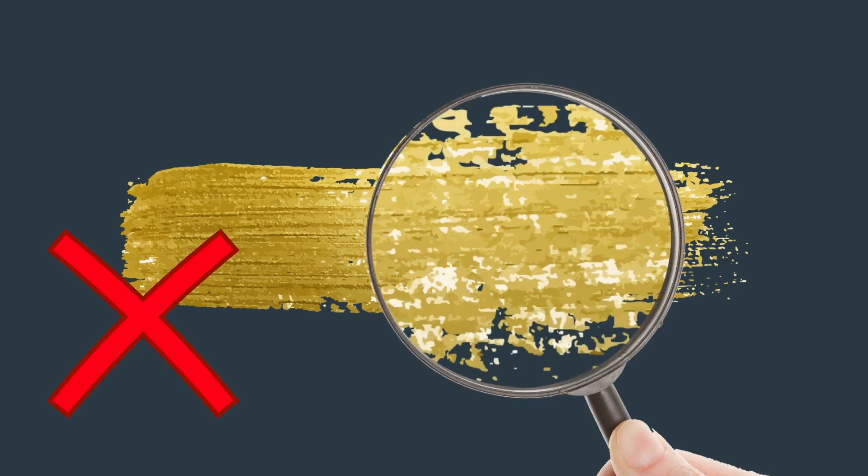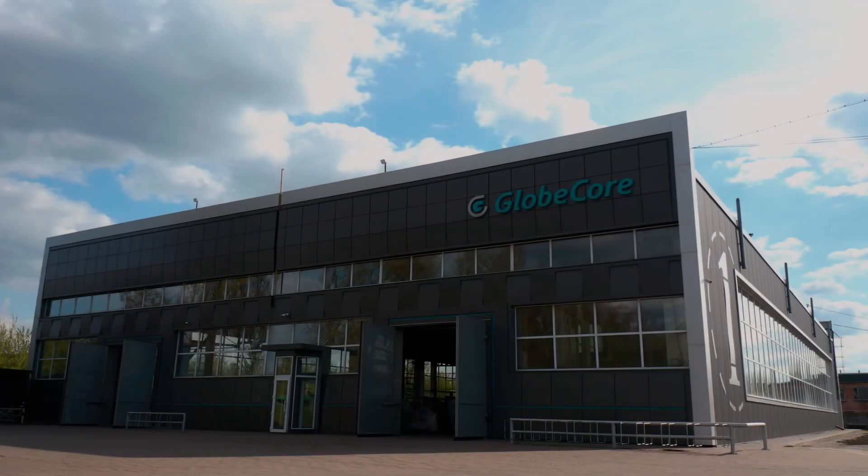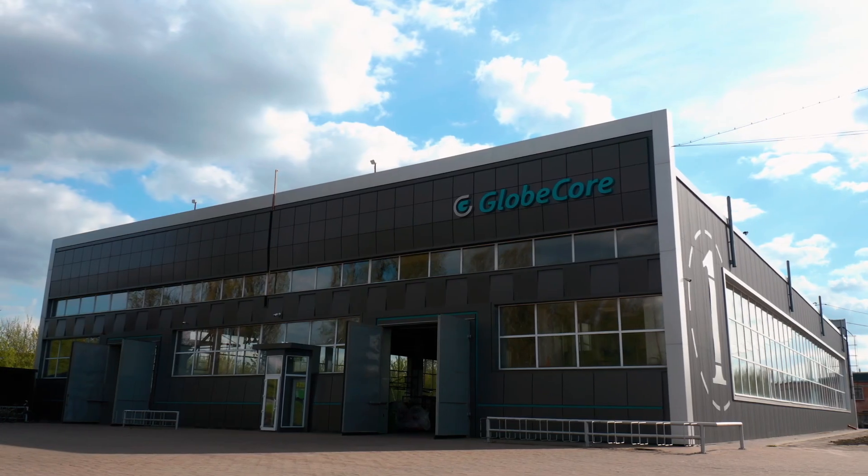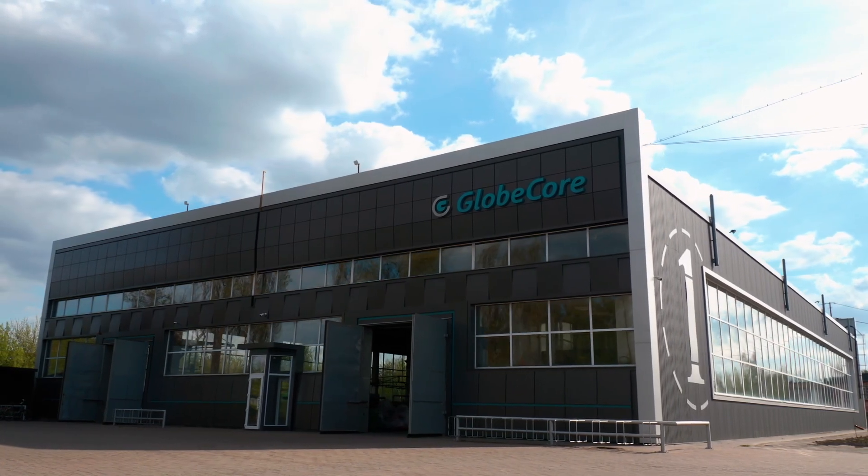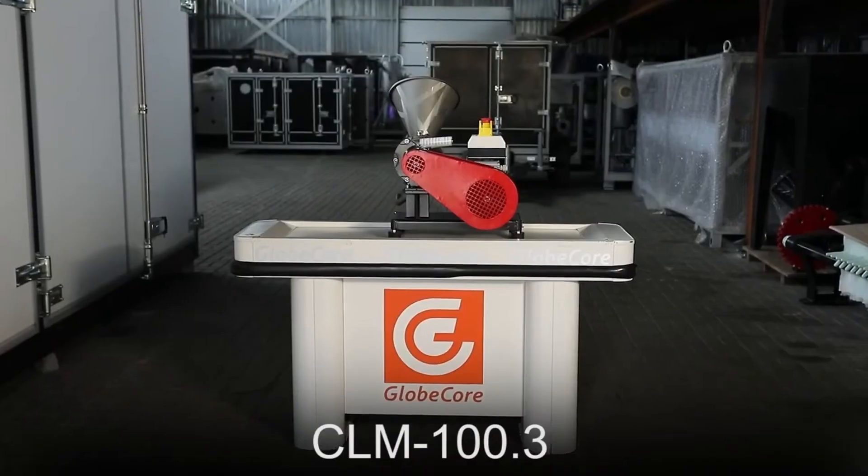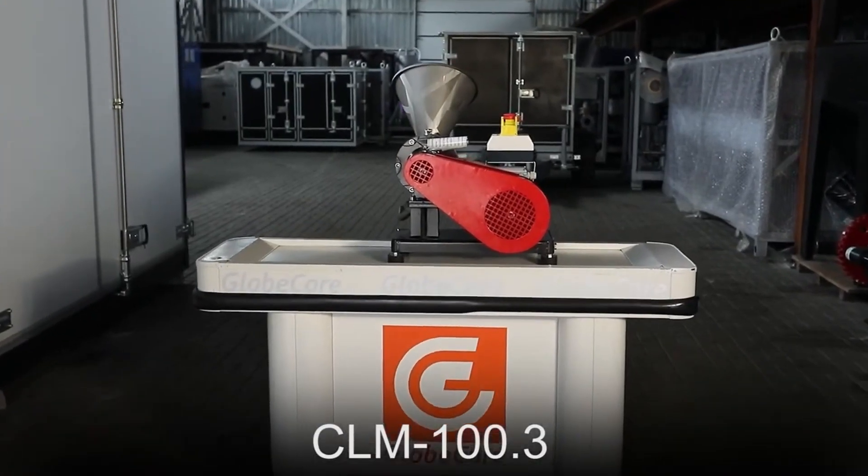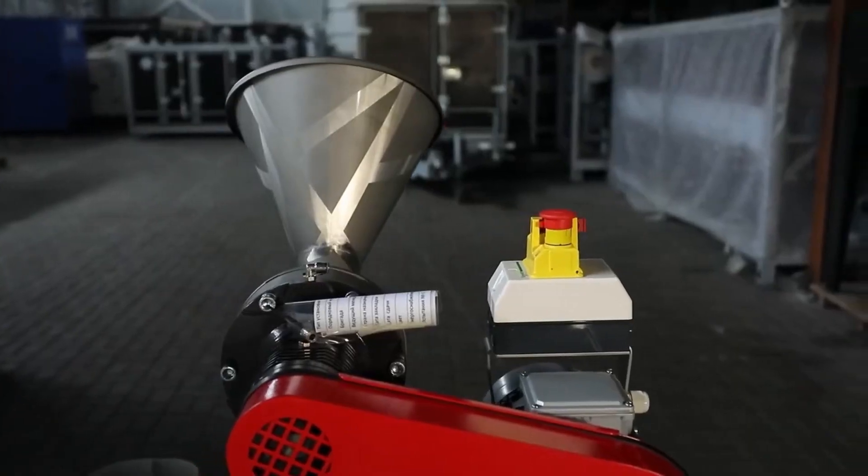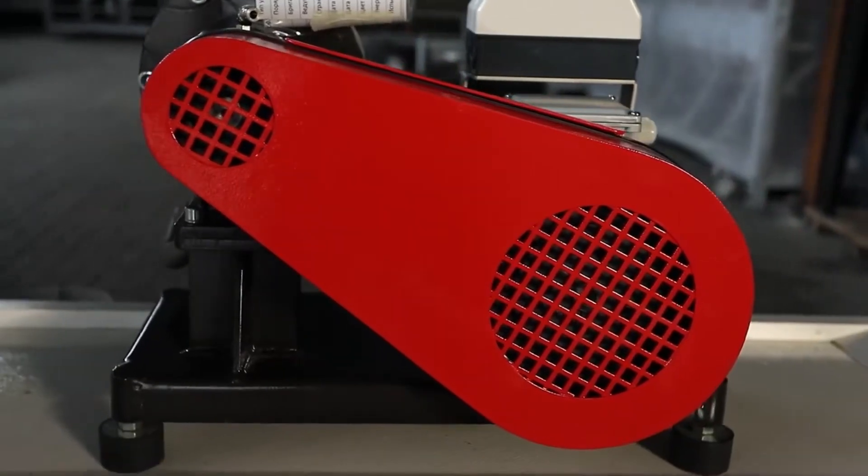GlobeCore has developed a paint production technology using CLM colloid mills. These mills can be used for pre-mixing systems with high solids content, for grinding, pre-dispersion, final dispersion of solid particles, and even for grinding temperature-sensitive paint constituents.